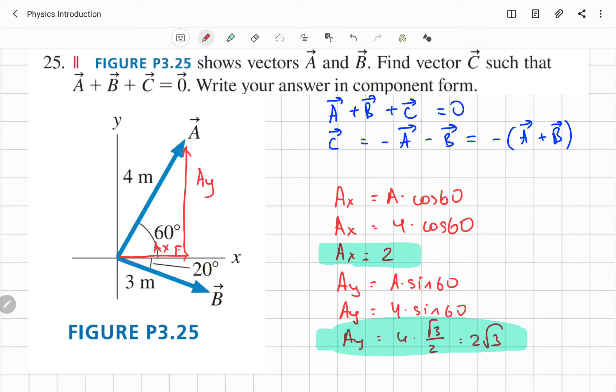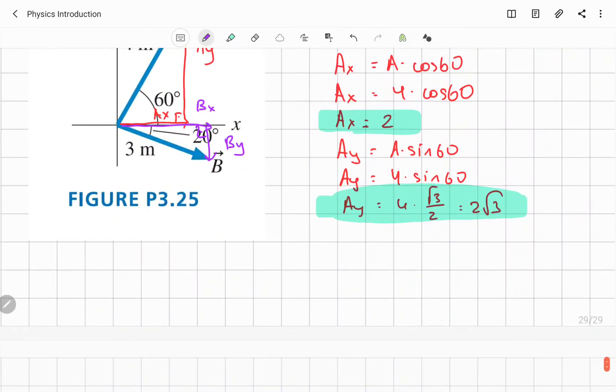Now let's come to the B vector, second vector. This will be x component, positive Bx. And this will be y component, which is negative because of direction going downward.